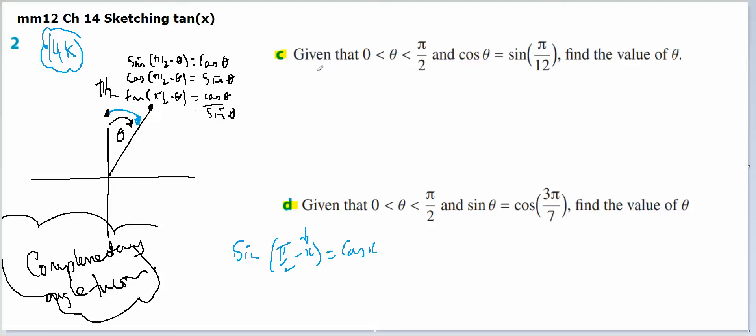Okay, so I'm told I'm in the first quadrant from zero to π/2, so I'm in this quadrant here. The cosine of theta is going to equal the sine of π/12. So I'm going to be using this rule here.